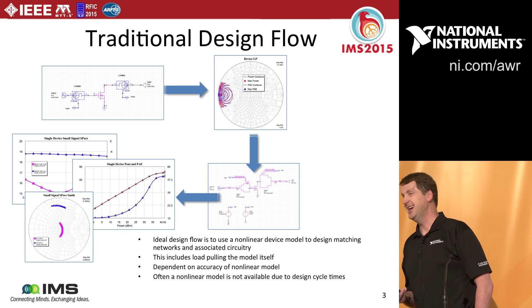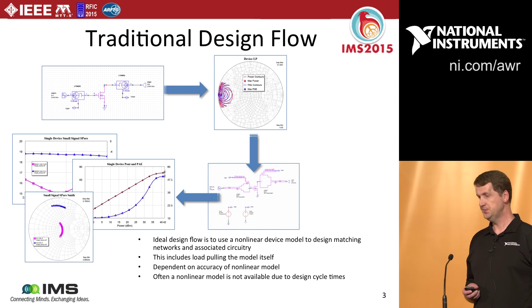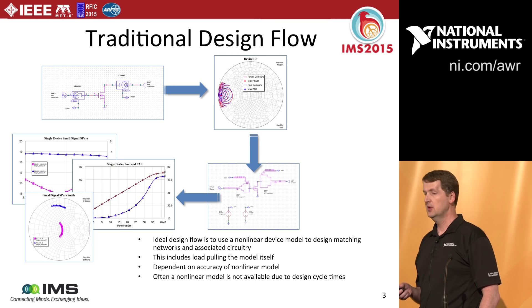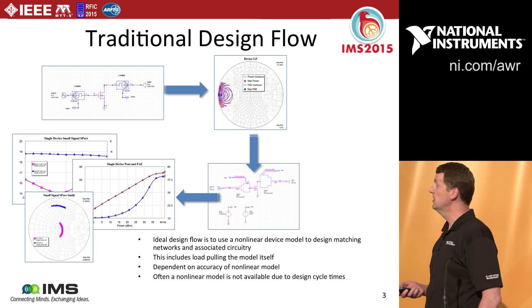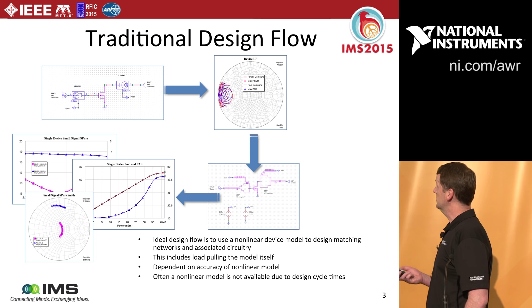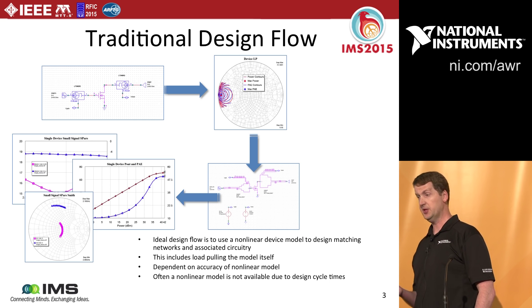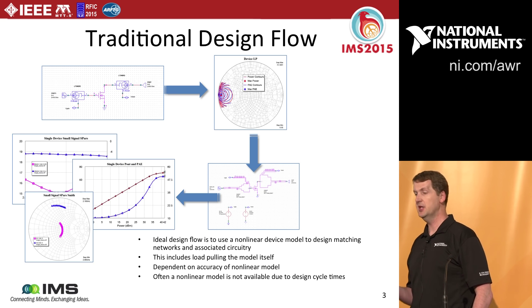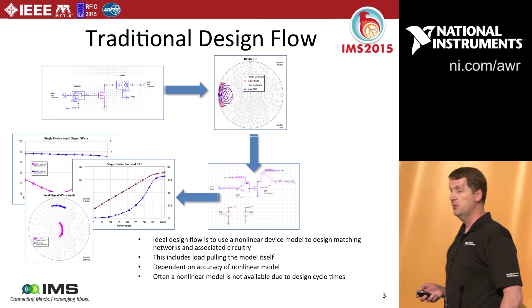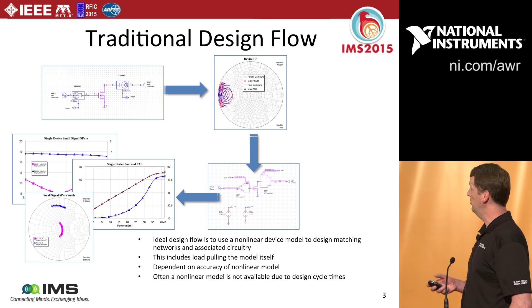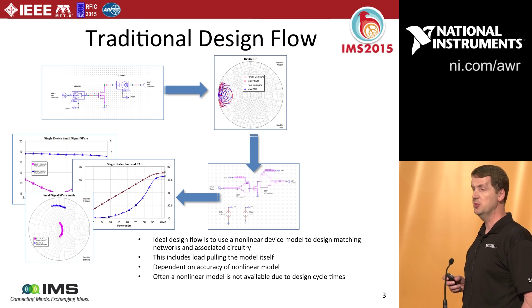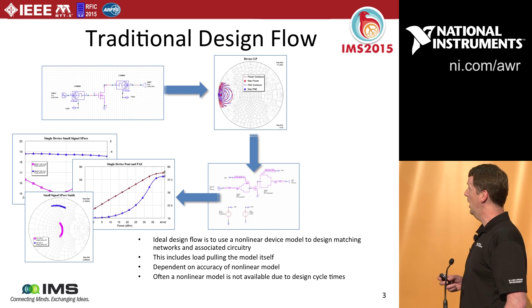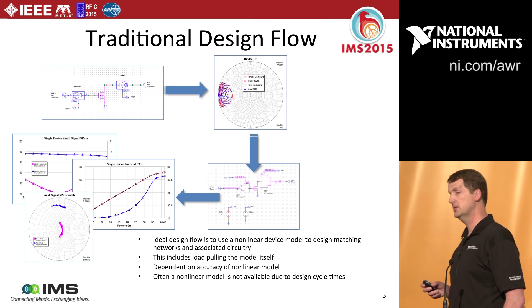A traditional, or I should say an ideal traditional design flow typically involves a non-linear model for your device, and typically involves load pulling that model in your circuit design software of choice. From that data, you create your input and output matching networks, plot the performance criteria that are important to your design, and then tweak your matching networks until you meet all your design goals, or at least optimize things to the fullest extent possible.